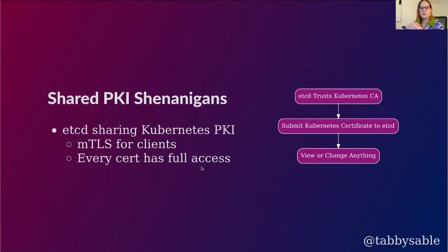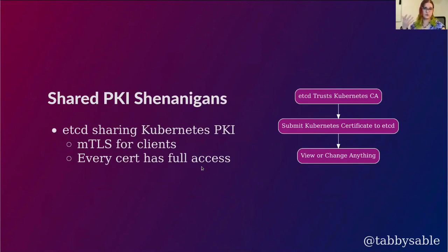We'll move on to another demo — what happens if you only have one independent PKI in your Kubernetes cluster. As we discussed before, etcd uses mutual TLS to authenticate clients connecting to it, and in the usual configuration, every certificate signed by the etcd CA has full access to the contents of etcd — which stores everything for your control plane. Therefore, if etcd trusts the same certifying authority that Kubernetes client credentials are issued from, you can simply submit a Kubernetes client certificate to etcd and access anything you want.